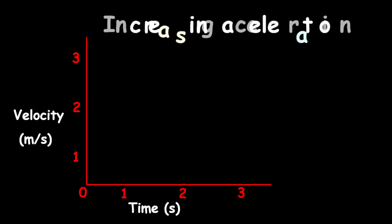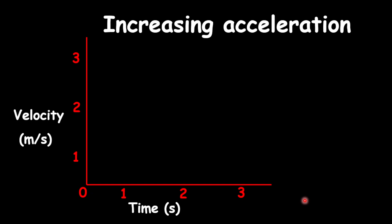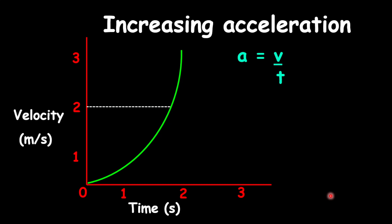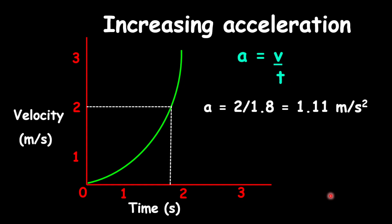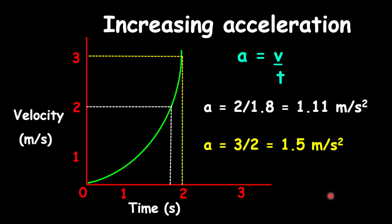Now let's look at increasing acceleration. Increasing acceleration produces a steeper curve on the graph. Along this path, each point on the velocity axis will have a different acceleration. For example, when velocity was two meters per second, the time was approximately 1.8 seconds, giving acceleration = 2 / 1.8 ≈ 1.1 m/s². But at three meters per second with a time of about two seconds, acceleration = 3 / 2 = 1.5 m/s². Notice as you go up the graph, the acceleration is increasing — so it is not uniform like the straight line we had before.